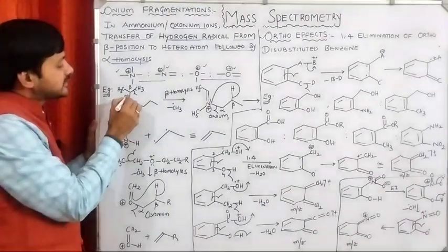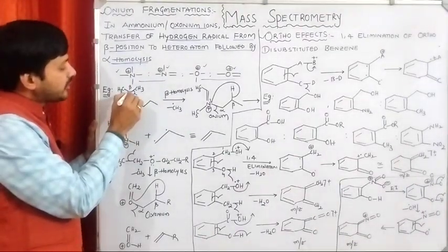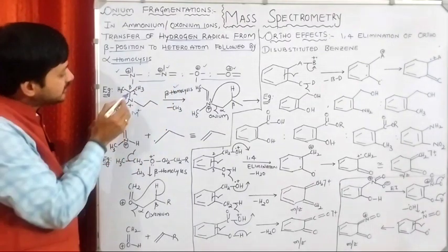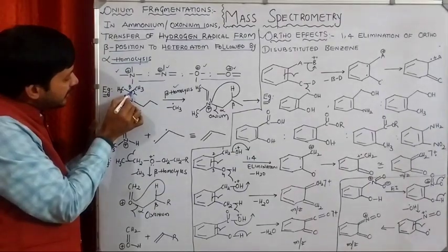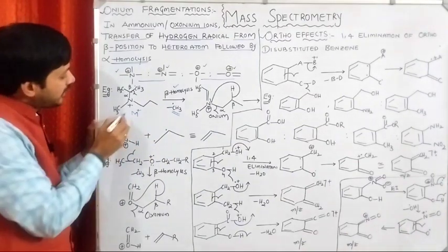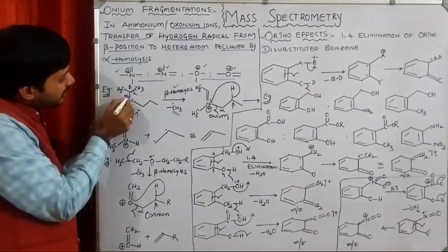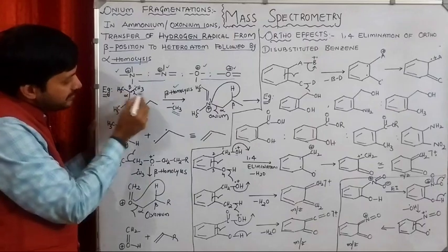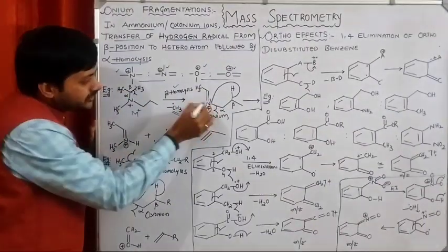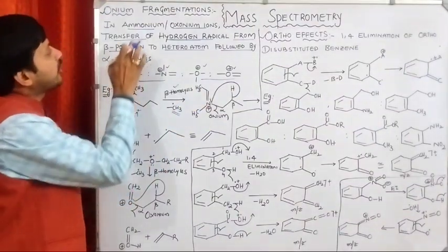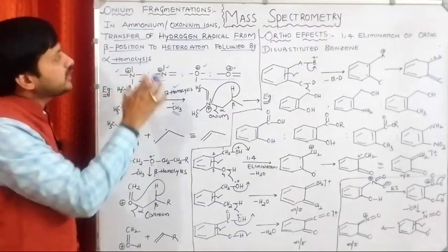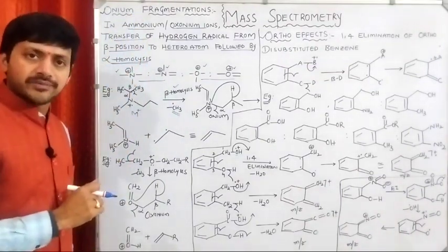This molecular ion is initially subjected to beta bond homolytic cleavage — this is the alpha bond and this is the beta bond. The beta bond undergoes homolytic cleavage, thereby generating a radical. The CH3 radical will be removed, and the carbon radical and nitrogen radical can form a pi bond. Nitrogen is getting the positive charge, and that's why this ion is commonly called the ammonium ion. This ammonium ion is going to be involved in the onium fragmentation.